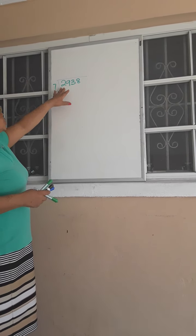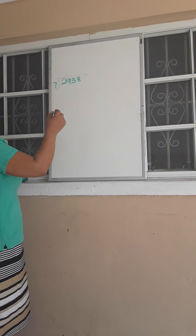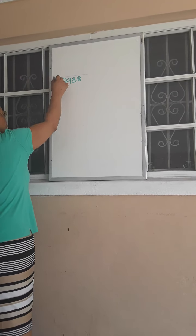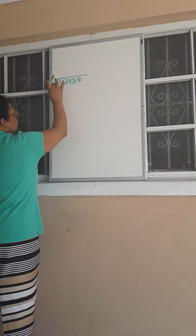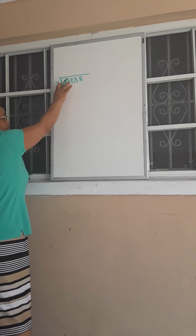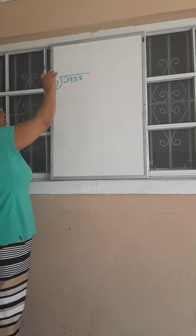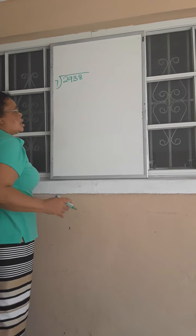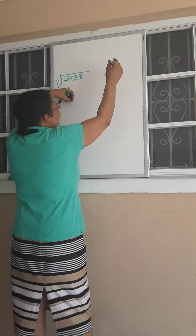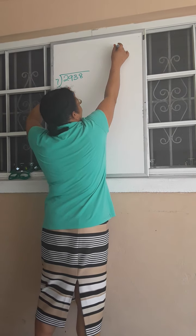I have 2938 to be divided by 7. Now let's go. 7 into 29. In other words, how many times can I get 7 out of 29? To make this easy for me, let me first of all do my 7 times table.